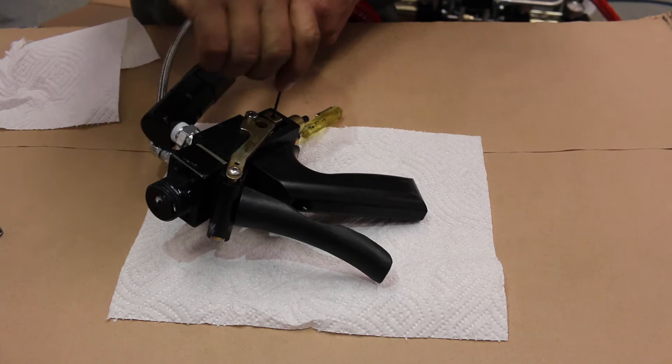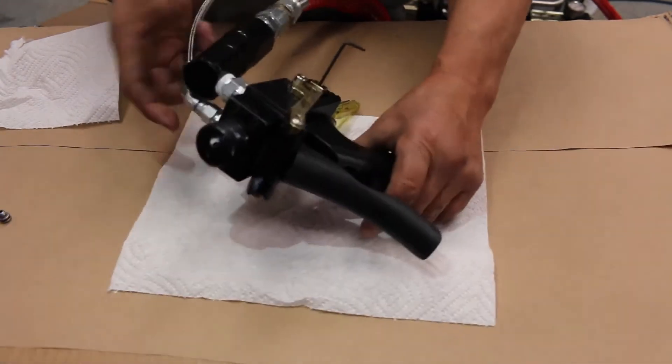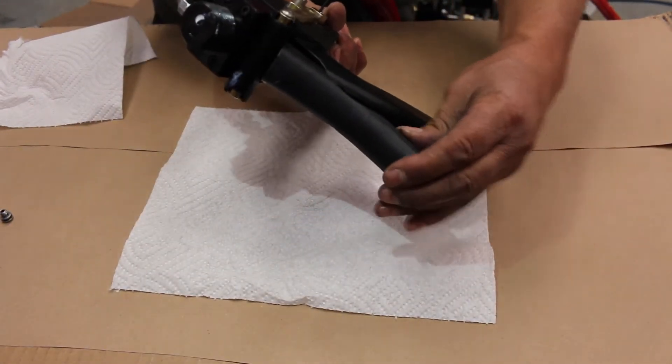This particular applicator has catalyst coming out too fast and does not need adjustments on the base, so we can go ahead and tighten the base set screw.